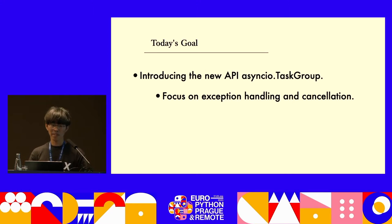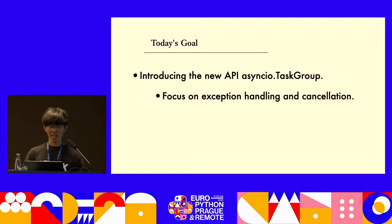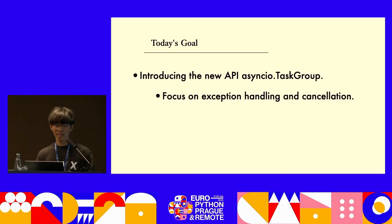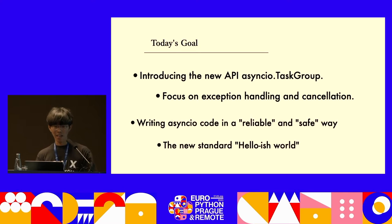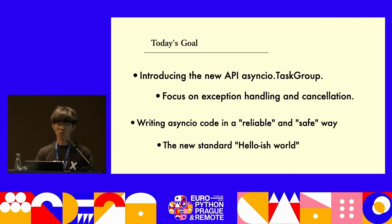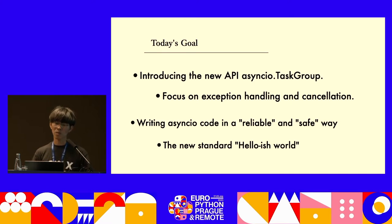Compare and explain the difference between Python 3.10 and Python 3.11. We can write exceptions easily, and this is how cancellation works. I hope this talk will inspire you to give the new API AsyncIO Task Group a try. I will guide you to a reliable and safe way of writing with AsyncIO Task Group, and I hope that together we can reach this new hello-ish world.